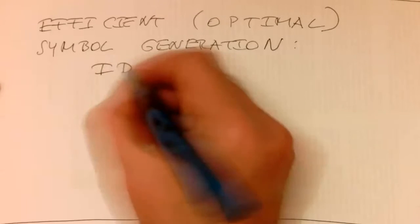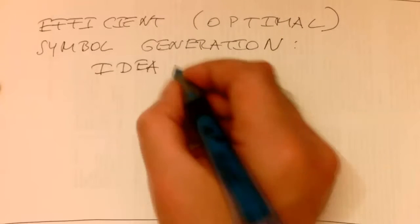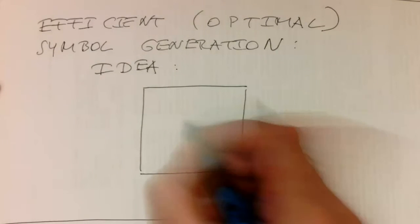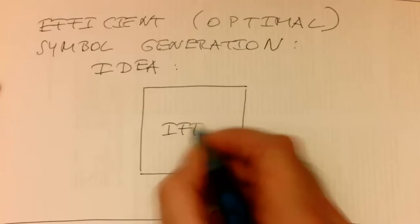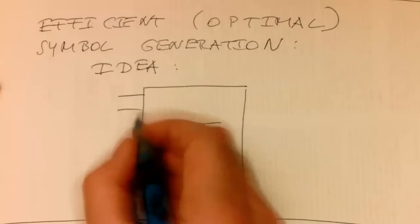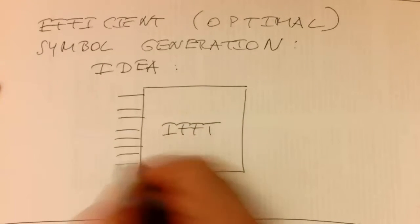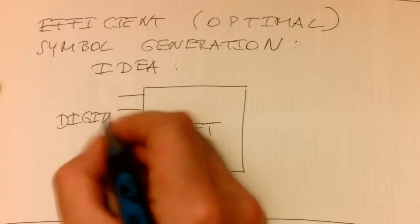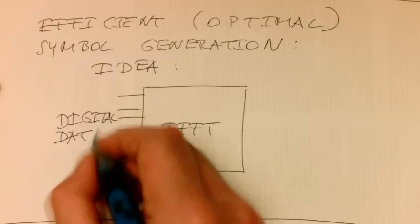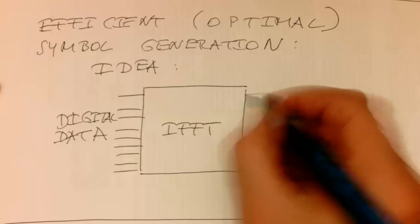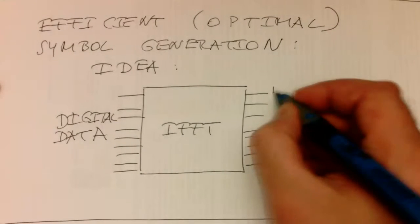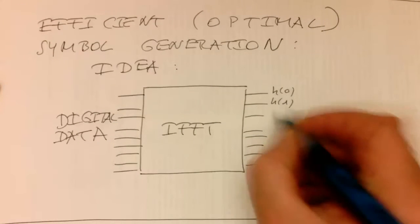Because the inverse Fourier transform can be basically used as a symbol, the idea is very simple. So we just take the inverse Fourier transform, that's our IFFT, and that's our digital data.